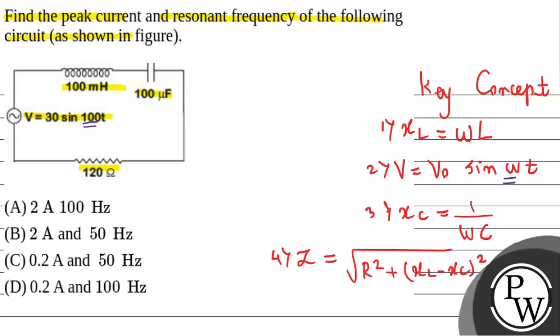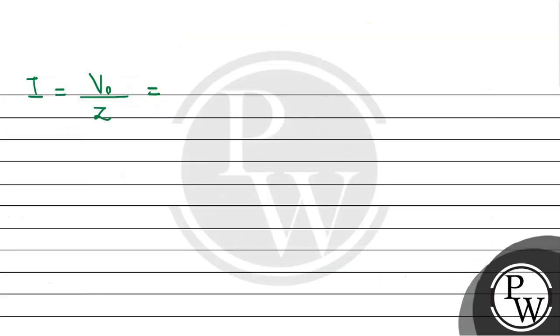Now we will use the formula of current from Ohm's law. Peak value of current will be equals to V0 divided by the impedance Z. If you see the peak value of voltage on comparing will be 30. V0 is 30 divided by impedance 150. After dividing this, we will get the peak value of current as 0.2 ampere. This is the first answer to our question.